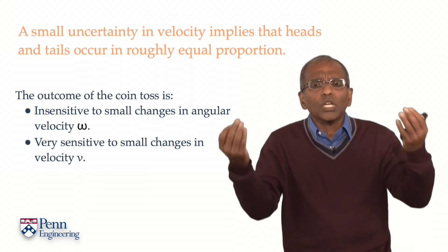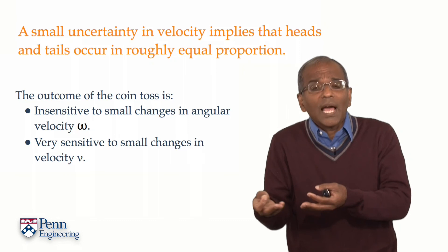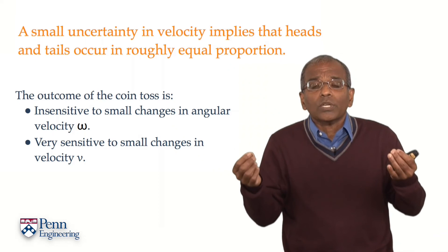Any reasonable model of uncertainty will then tell you that you are as likely to end up in a shaded region as in an unshaded region. You conclude inevitably that the coin toss outcome is heads and tails with equal chance.